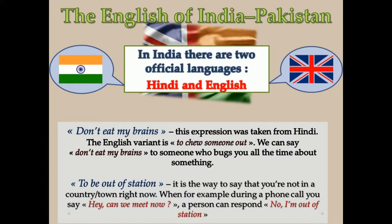There are some words and expressions that have different meanings from British English. For example, 'Don't eat my brains' — this expression was taken from Hindi; the English equivalent is 'to chew someone out'. We can say 'don't eat my brains' to someone who bugs you all the time about something. 'To be out of station' is the way to say you're not in a country or town right now — for example, during a phone call one might respond 'No, I'm out of station.'